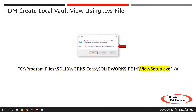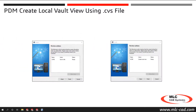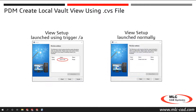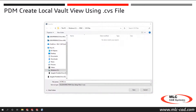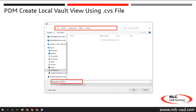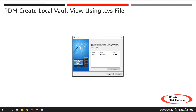When the view setup wizard is run using the trigger /A, the Action column on the Review Action screen will display 'Save to File' instead of 'Create Local Vault View.' Click Finish to launch the save dialog and then enter a name and location for the CVS file to save. You are then returned to the view setup wizard and the completed screen displays.